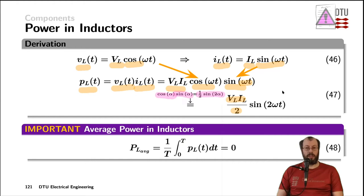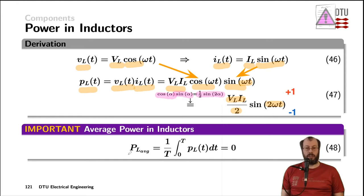In this case, the instantaneous power alternates up to a maximum of plus one and down to a minimum of minus one, with twice the original frequency of the test signals. As that sine wave is centered around the time axis, the average real power of an inductor — which is the average value of the instantaneous power, integrating from 0 to T and dividing by T — equals zero.